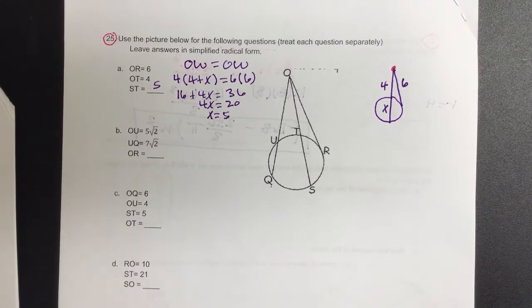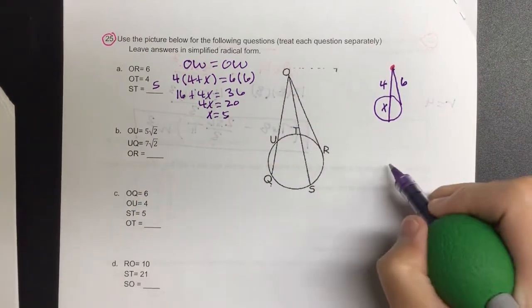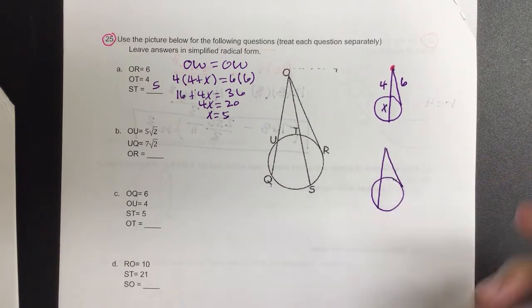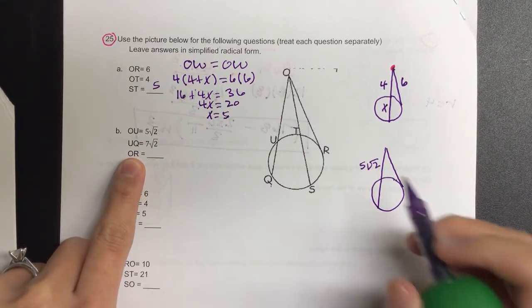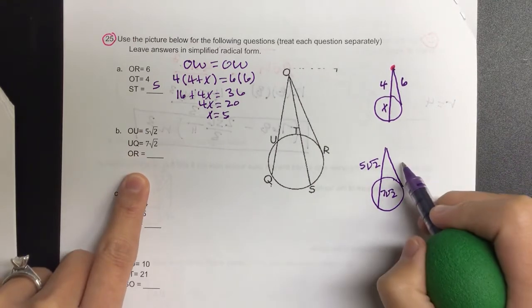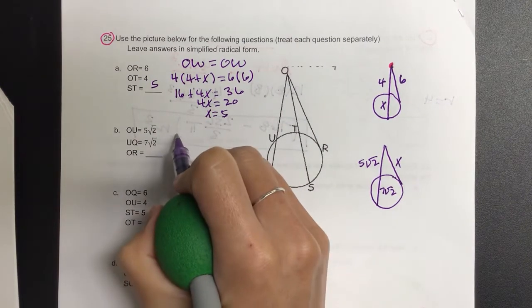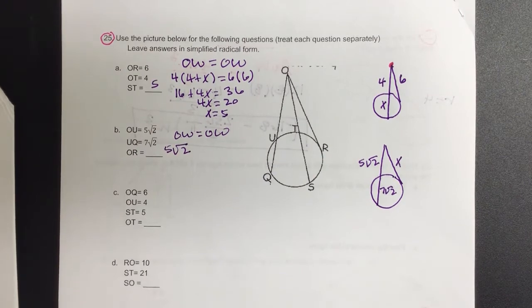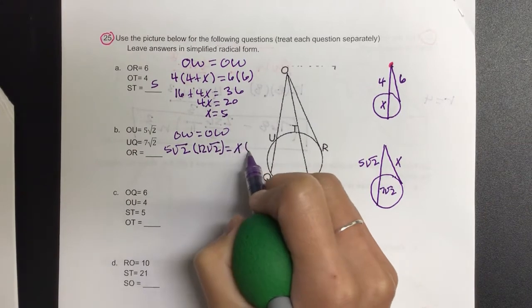Are we ready for B? For B, I know we need OU this time and OR. So I'm going to ignore the middle piece. So here I have something over here and something over here. I'm just re-sketching every time. So OU is 5√2, and then UQ is 7√2. And it's asking us for OR. Let's call that X.